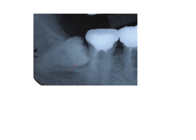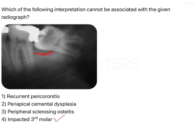Looking at the image, the crown ends here and there is a radiolucent gap — this radiolucency is basically an indication of bone loss that occurs due to recurrent pericoronitis. So in this radiograph, both impacted third molar and recurrent pericoronitis can be associated. Now moving to the next two options: periapical cemental dysplasia and peripheral sclerosing osteitis.